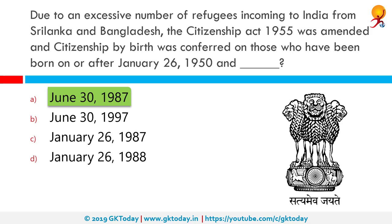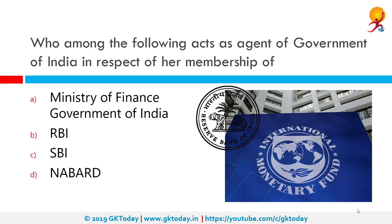Indian nationality law largely follows the jus sanguinis, or citizenship by right of blood, as opposed to jus soli, which is citizenship by right of birth within the territory. The President of India is termed the first citizen of India. Who among the following acts as agent of the Government of India in respect of membership of the IMF? The correct answer is RBI. In India, the focus of IMF work is to facilitate the flow of information between the Government of India and the Reserve Bank of India, and to train officials from RBI and national and state governments.